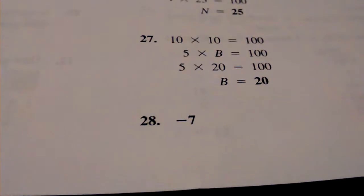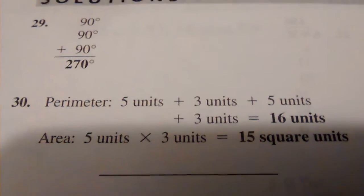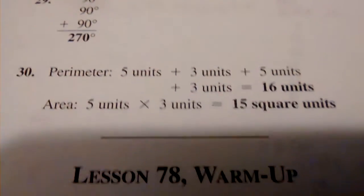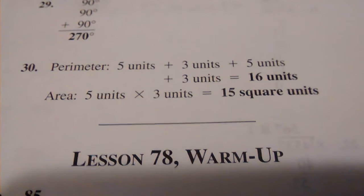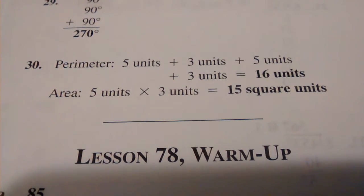Number 28, negative 7. Number 29, 270 degrees. Number 30, 16 units and 15 square units.